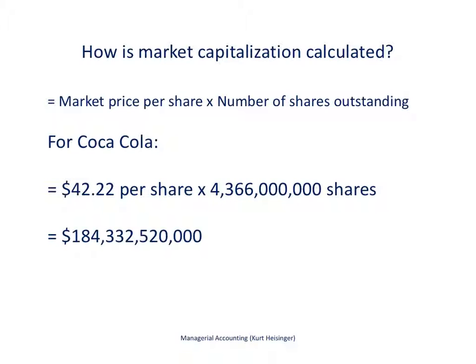Let's start with market capitalization. How do we calculate the market capitalization of a company? The equation is here: it's the market price per share times the number of shares outstanding. We have to match up the time frame of both — we need to know the number of shares outstanding for the point in time that we want to make this calculation, and then we have to make sure we have the market price per share for that exact same point in time.